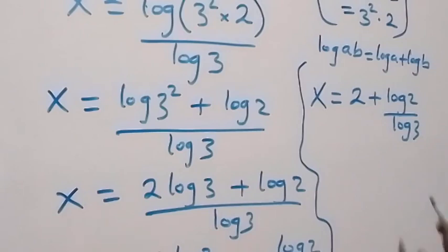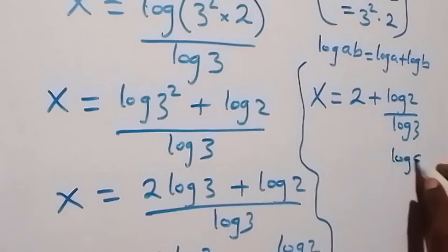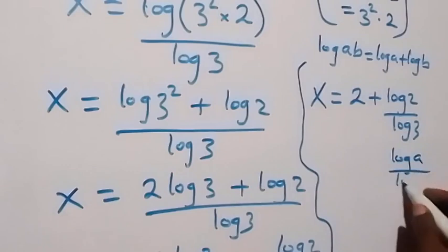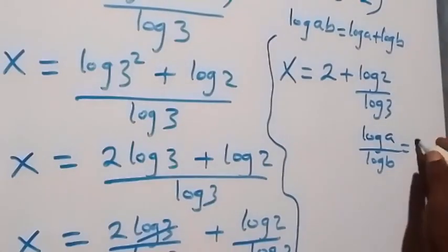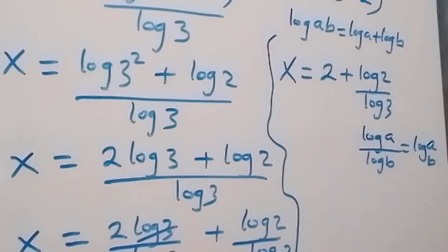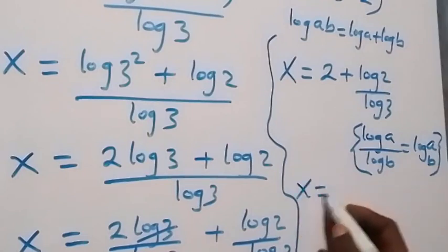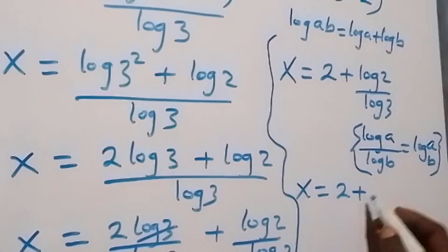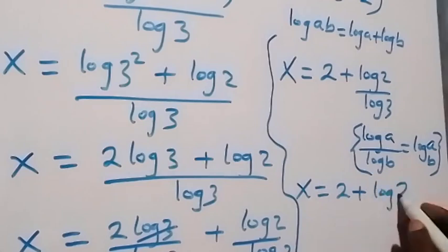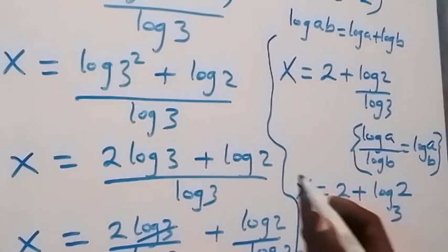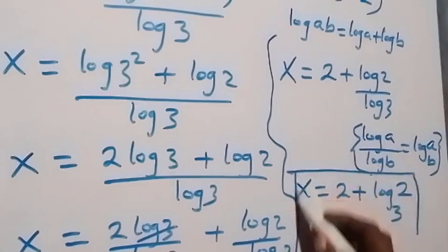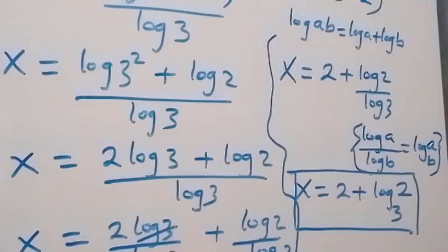And from what we have here, we have log a over log b. So you can use the change of base rule and this is the same thing as log a to base b. So when we apply this to log 2 over log 3, then x now equals to 2 plus log 2 to base 3. So here we have the solution to this given problem: x equals to 2 plus log 2 to base 3.